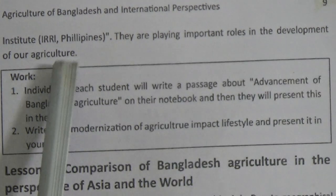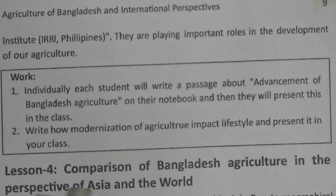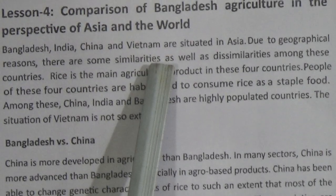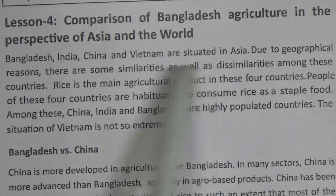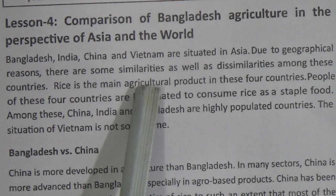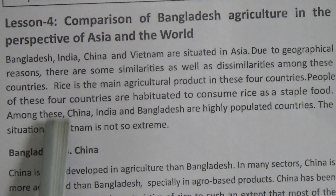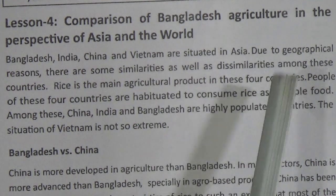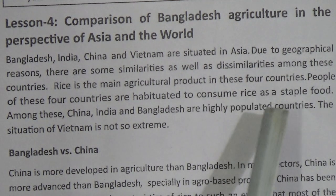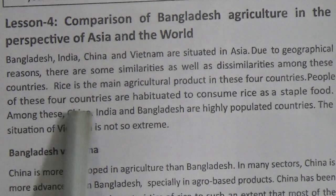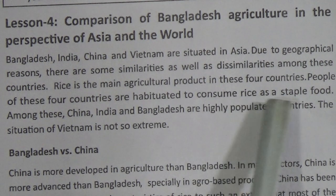Now we learn Lesson Four: Comparison of Bangladesh Agriculture in the Perspective of Asia and the World. Bangladesh, India, China, and Vietnam are all situated in Asia. Due to geographical reasons, there are similarities among these countries. Rice is the main agricultural product in all four countries. The people of these four countries are habituated to consuming rice as a staple food.